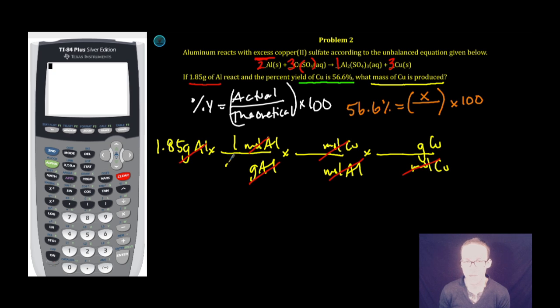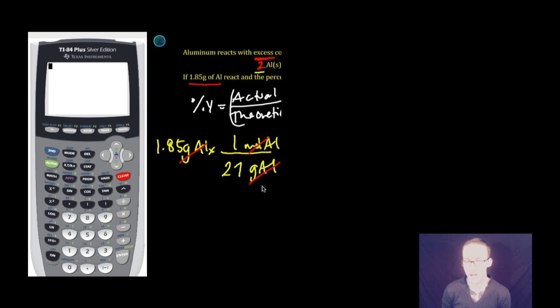One mole of aluminum is approximately 27 grams from the periodic table. The relationship between copper and aluminum here is a three to two relationship. That comes from the coefficients in the balanced chemical equation. Grams to moles comes from the periodic table. I'm going to estimate here and say the mass of copper is about 64 grams. All right, now watch what I do in my calculator. I'm going to do it one conversion factor at a time.